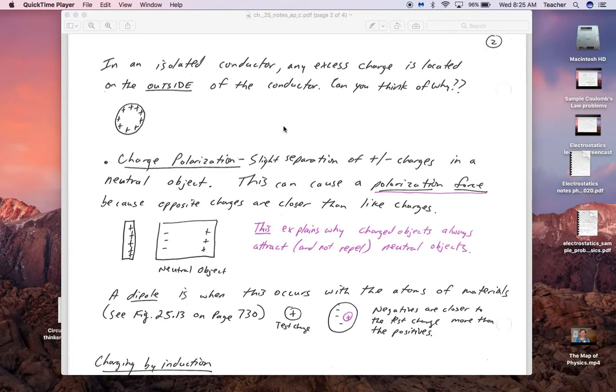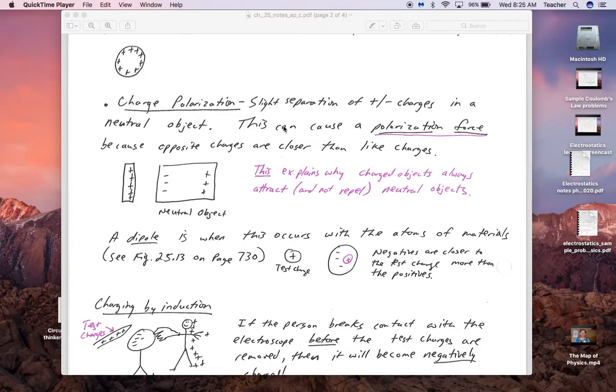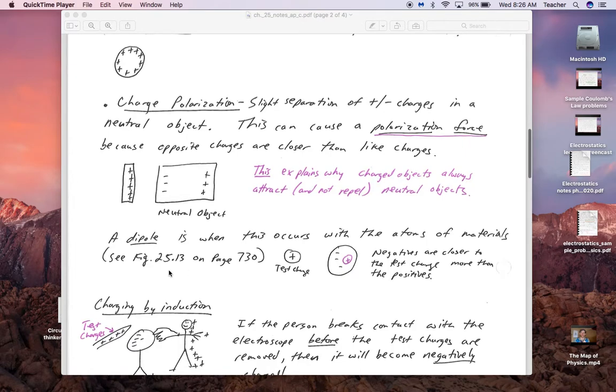That's because most of their electric forces on each other are pointing outward, because their electric field lines point out perpendicular from the surface. Polarization is when you have a slight separation of the positive and negative charges in a neutral object. If something positive is brought close by and this is a neutral object, the negatives would be attracted, the positives would be repelled. Since the negatives are closer to these positives than the positives are, the net attractive force is greater than the repulsive force.